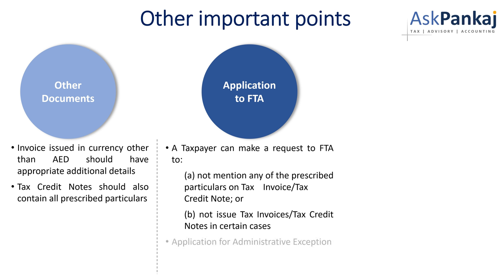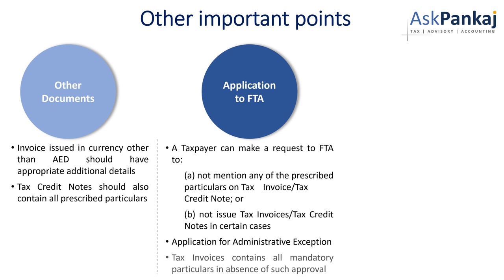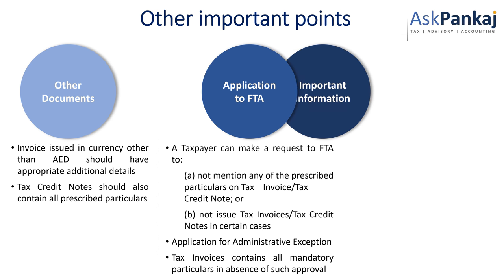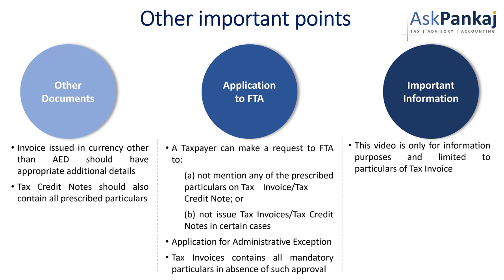Please note that a formal application can be made to the FTA to seek an exception from mentioning any of the prescribed details on a tax invoice or tax credit note. This process is called an Application for Administrative Exception. You may explore the process yourself or contact a tax advisor. Unless you have express exception approval from the FTA, all mandatory particulars should be mentioned on tax invoices and tax credit notes. This video is only for information purposes and is limited to the particulars of the tax invoice.